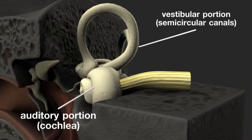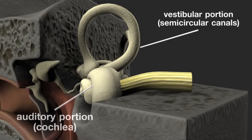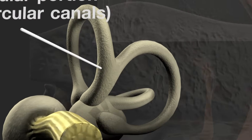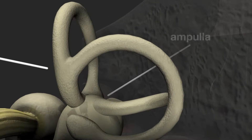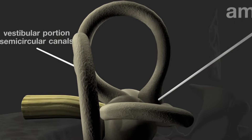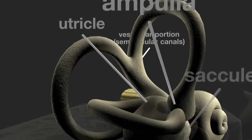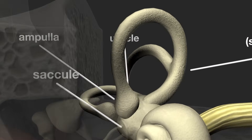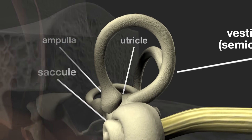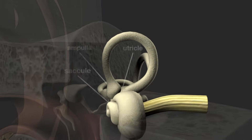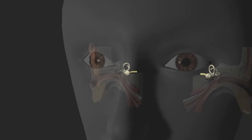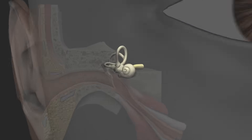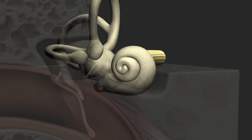The inner ear has two distinct portions: the vestibular portion, concerned with balance, and the auditory portion — the cochlea — which is concerned with hearing. The vestibular portion is made up of three semicircular canals. Each canal has a swelling at one end called the ampulla, and two membranous sacs — the utricle and the saccule — which contain fluid and sensory cells that move in response to head movements to indicate the body's status. The vestibular system works in conjunction with the eyes and the receptor cells in the joints of the body to continuously maintain our balance.